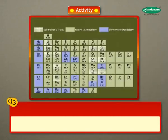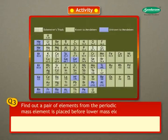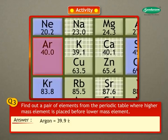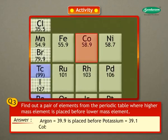Question 3: Find out a pair of elements from the periodic table where the higher mass element is placed before the lower mass element. Answer: Argon (39.9) is placed before potassium (39.1). Cobalt (58.9) is placed before nickel (58.6). Tellurium (127.6) is placed before iodine (126.9).